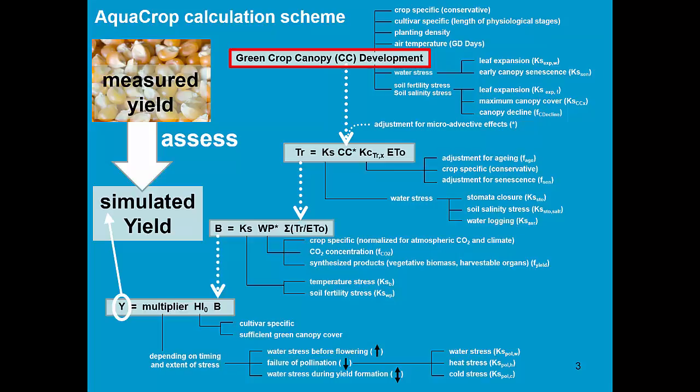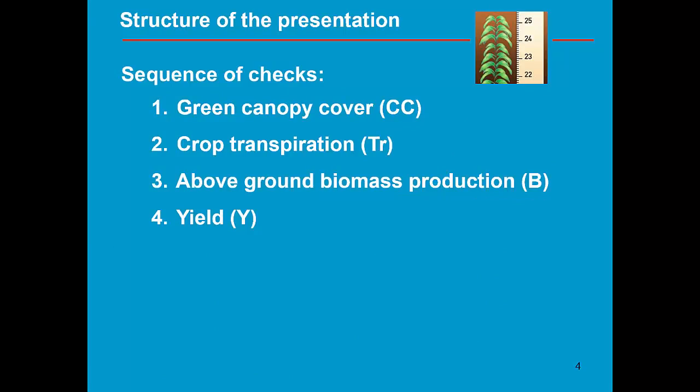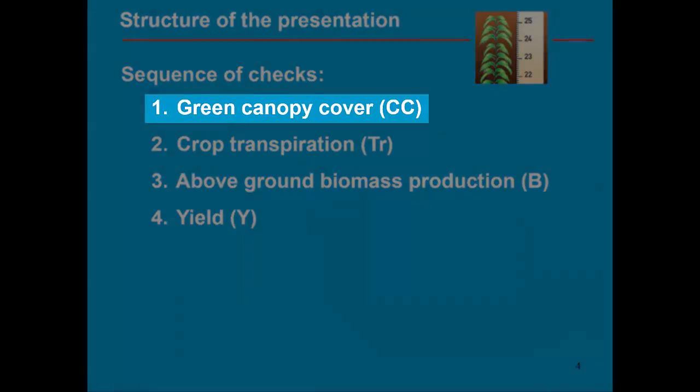Namely, with green canopy cover. If that is ok, then we should check transpiration. If that is ok, then we should check biomass. And finally, we can check the simulation of the final yield. So the structure of this module shows the sequence of checks which one has to run in case there is a mismatch between simulated and observed data. Let's start with the green canopy cover.